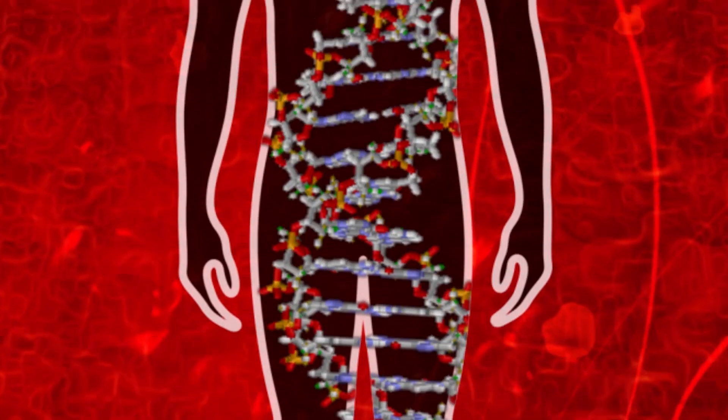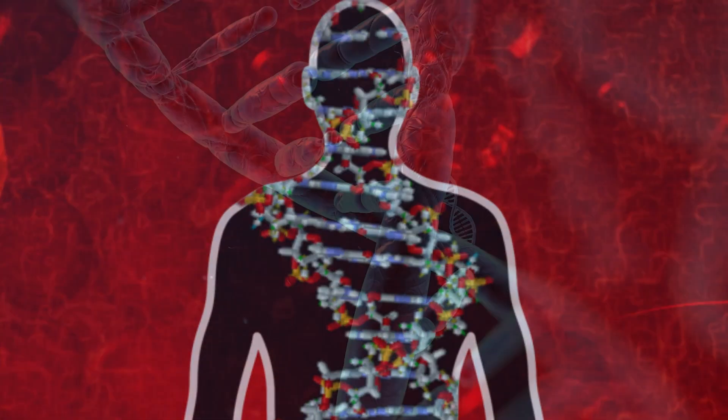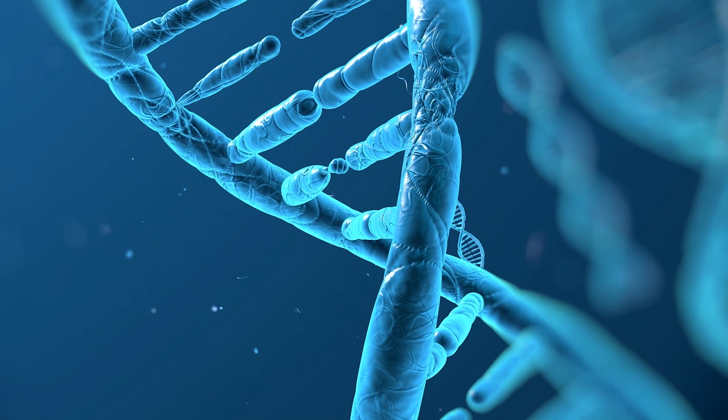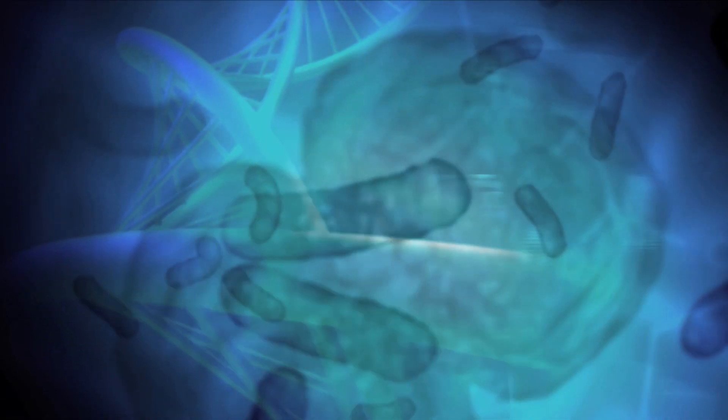One thing that happened not too long after I got to Berkeley was that I met another professor, Jill Banfield. Our paths crossed when she called me one day to tell me that her research had uncovered evidence of an adaptive immune system in bacteria, and she wondered if I, as a biochemist, might want to investigate how this worked.